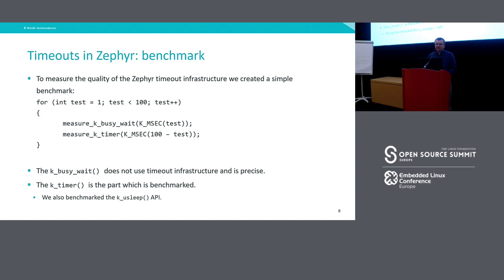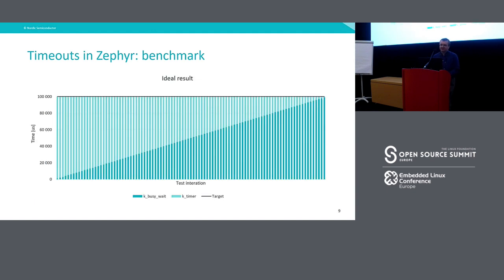So if we set up the benchmark like that, this is our ideal result: the time spent in K_BusyWait plus the time spent in K_Timer exactly matches our timer. This is the ideal result and it will not happen in practice. What can happen in a real system is that we will be slightly beyond the target, because there is some execution between the two tests and there is some overhead. But let's look at the actual results.